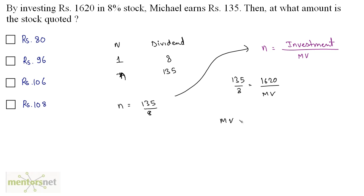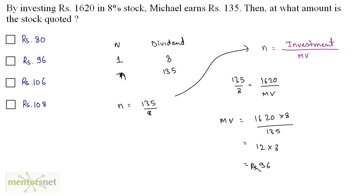The market value equals 1620 × 8 divided by 135. Dividing 1620 by 135 gives 12, and 12 × 8 = 96. So, Rs. 96 is the amount at which the stock is quoted. Option B is the correct answer.